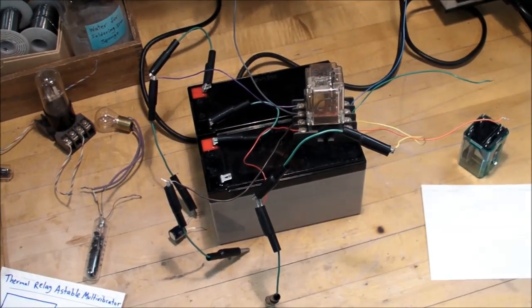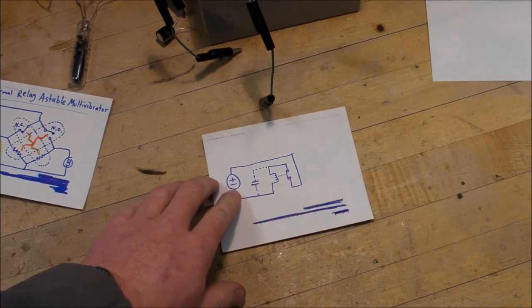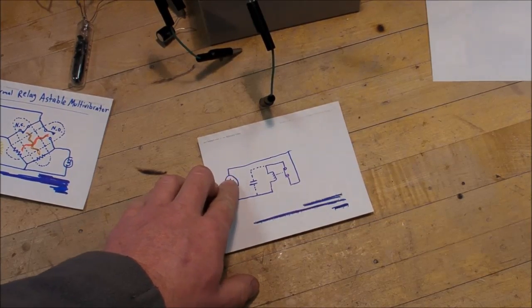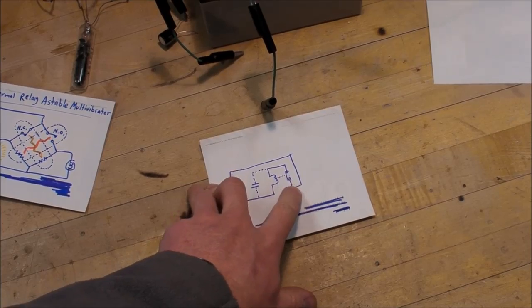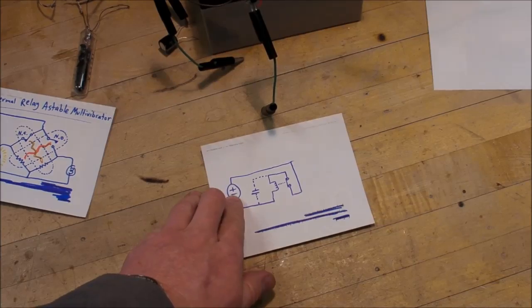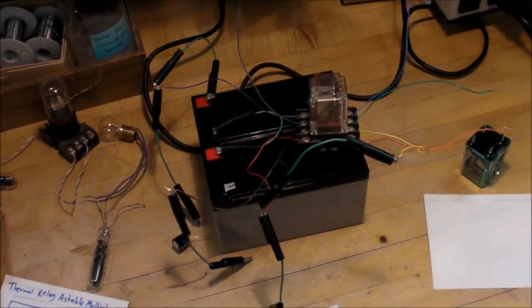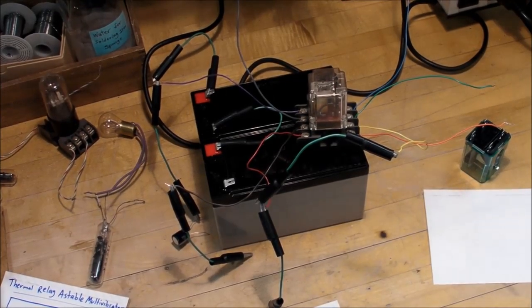And of course the most obvious one that I've known about for a long time is something like this, where you have a power source going through the normally closed contact and then that goes to the coil. And then that of course causes it to oscillate quite rapidly.